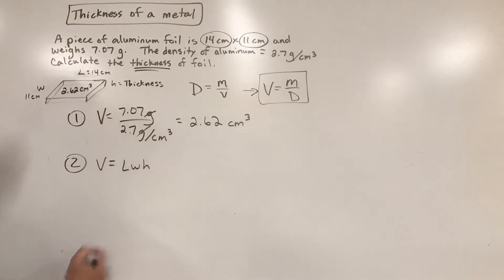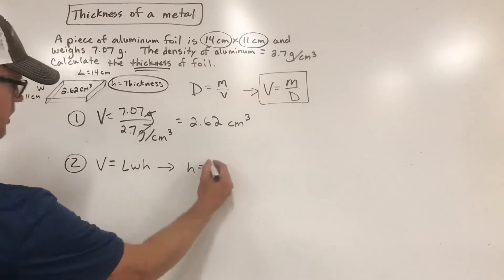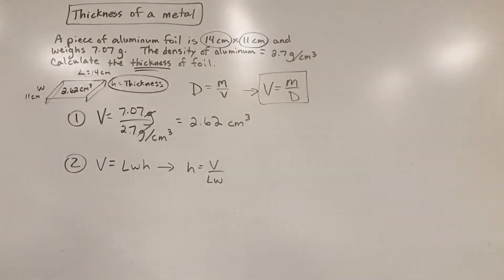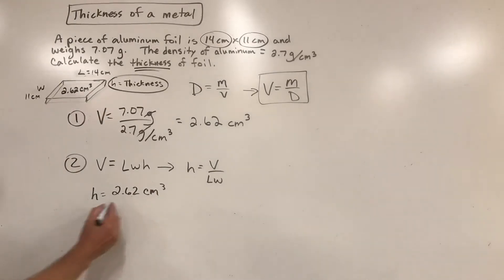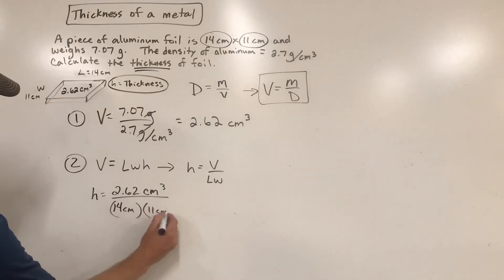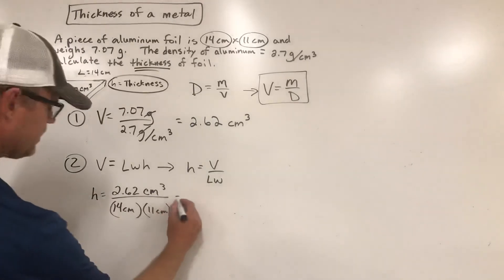Volume equals length times width times height. And remember, height is the thickness. That's a very easy formula. You guys have used that for boxes and cubes all the time. Let's look at what we have. We have the volume, we know that. We have the length and we have the width. We're just missing the height. So we need to rearrange this to get height by itself. If I try to get height by itself, height is going to be volume divided by the length and the width.